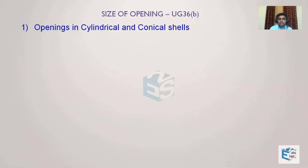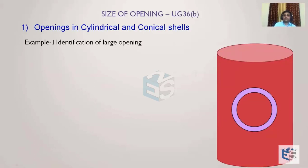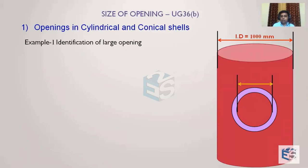Let's go through Example 1. Consider a cylinder with an ID of 1000mm. A nozzle opening of 600mm ID is to be made in this vessel. The question is: is this 600mm nozzle on a 1000mm ID vessel a large opening or a normal opening?